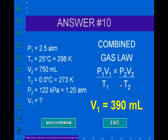Then take P2, which is right here, 1.2 atmospheres, multiply it by V2, right here, which was 750 milliliters, and divide by T2. T2 is right here, 273 Kelvin. Plug that all in. You should get 390 milliliters.